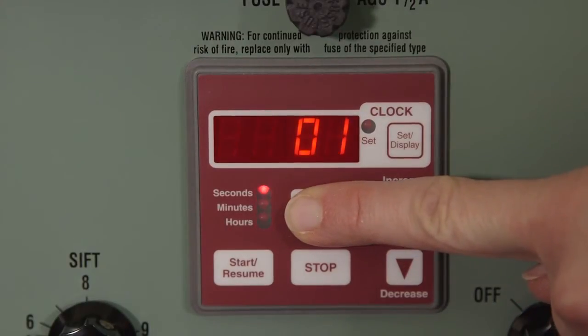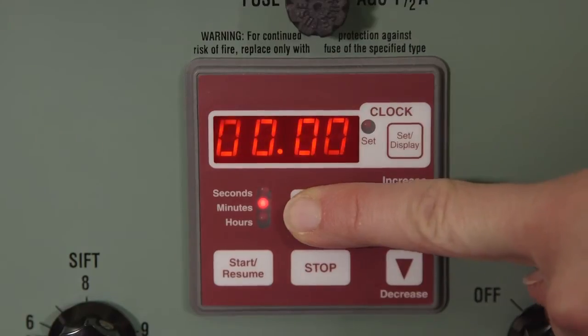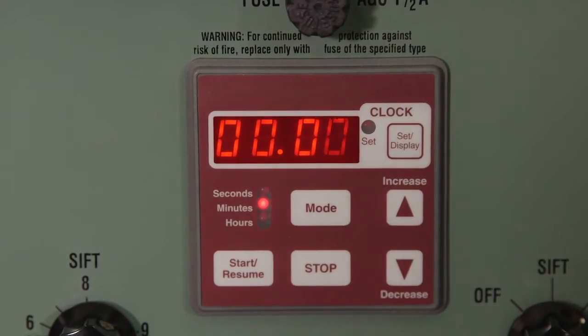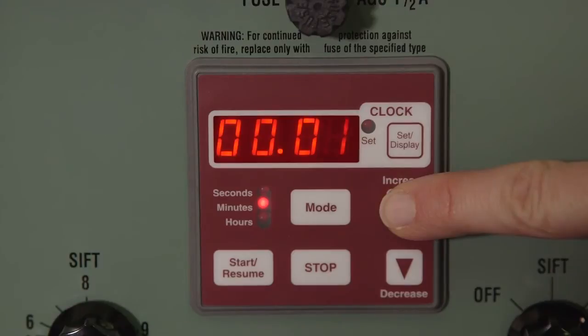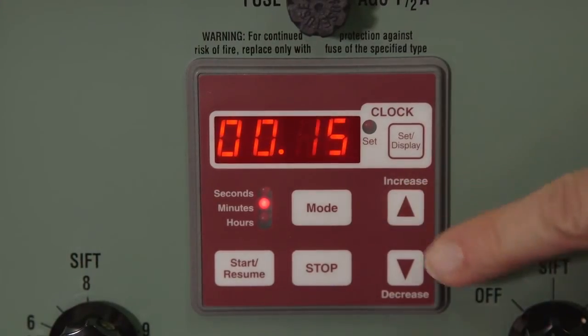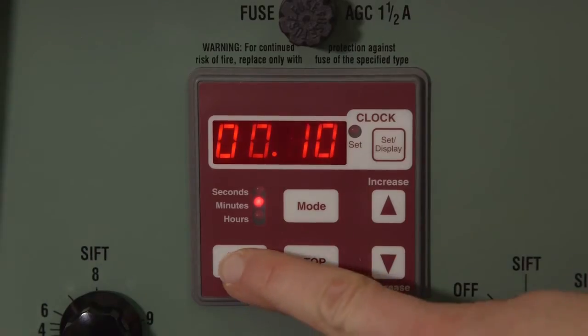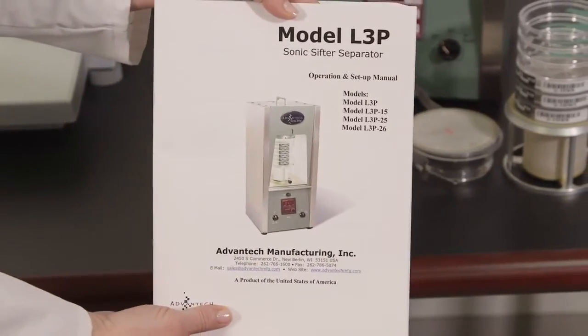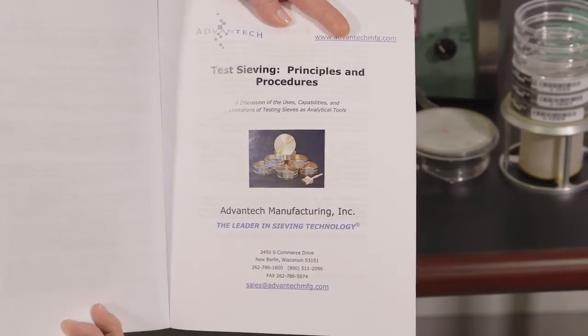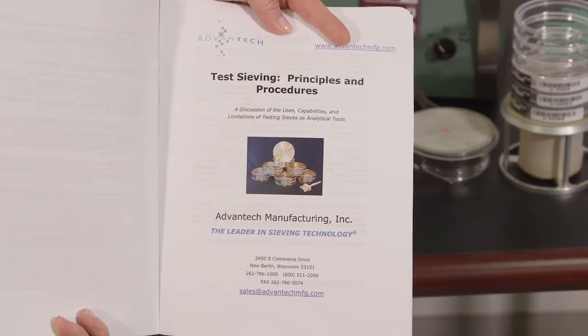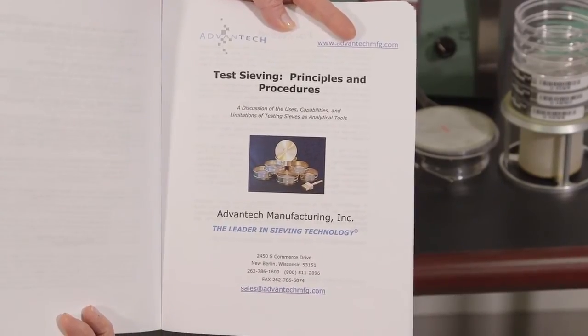Press and hold the mode button for one second. The LED will illuminate which mode is engaged. Set your countdown value by using the increase-decrease buttons. Once your time is set, hit start. If you are unsure of how long your test run should be, refer to our Test Sieving Principles and Procedures Manual located in the back of your operation manual or found on the product info page of our website.